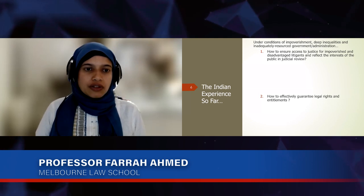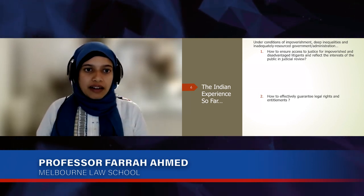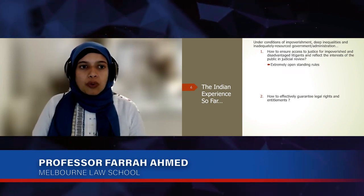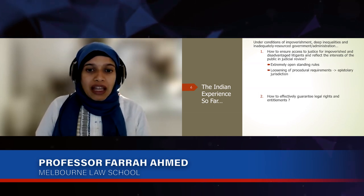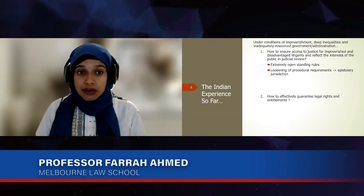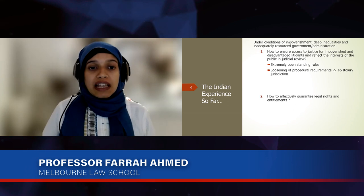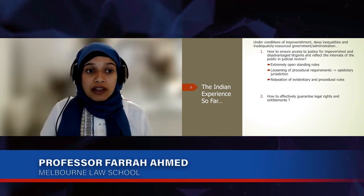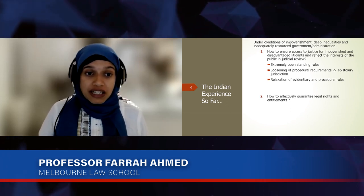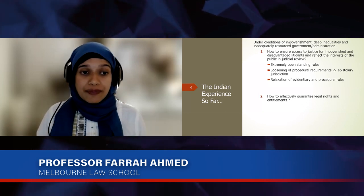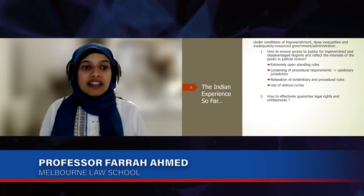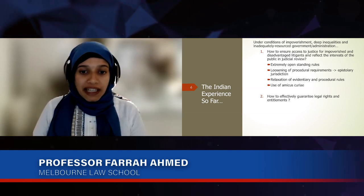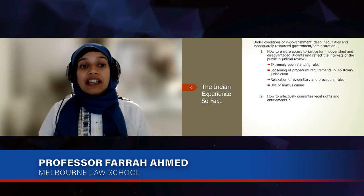On the first question of how to ensure access to justice for impoverished and disadvantaged litigants and reflect the interests of the public in judicial review, we see developments in India around extremely open standing rules. There have been developments around the loosening of procedural requirements, including what's been called the epistolary jurisdiction. There have been developments around relaxation of evidentiary and procedural rules, including around fact-finding, and a reliance on the use of amicus curiae.